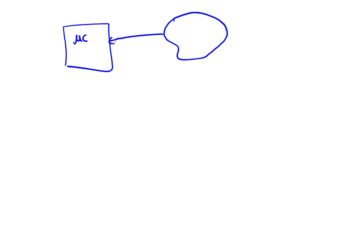In the previous video we looked at how our microcontroller can interface with the external world and capture stimuli that are analog in nature — for us that's going to be a variable voltage. Now we're going to look at what hardware our particular microcontroller, the TM4C, has internally and how we program it to do our capture operation. We'll look at our ADC in TM4C.